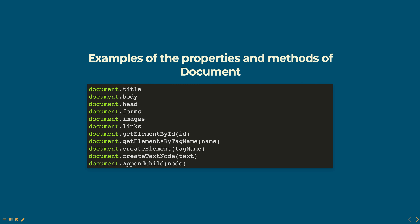Document.getElementById gets an element by its ID. Document.getElementsByTagName gets a collection of elements by their tag name. Document.createElement creates a new element with a specified tag name. Document.createTextNode creates a new text node with a specified text. Document.appendChild adds a new child node to an element.